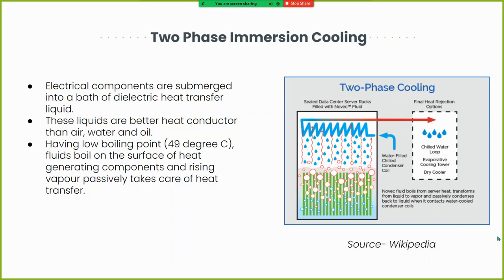A little about the two-phase immersion cooling system: electrical components are submerged into a bath of dielectric heat transfer liquid. As you can see in the image, the green figures are the components submerged into the liquid. These liquids generally have a low boiling point, and the vapor subsequently generated due to the heat of the components passively takes care of the heat transfer.